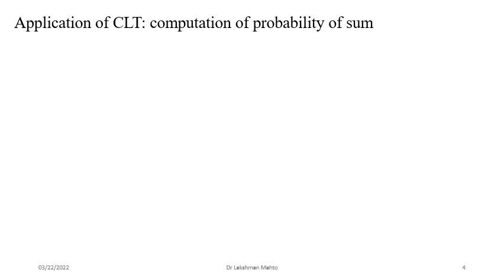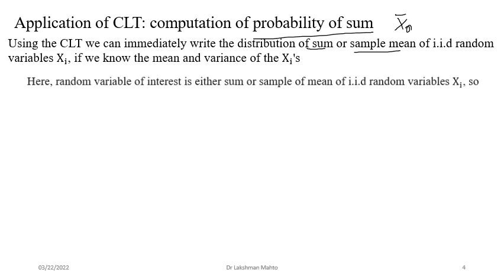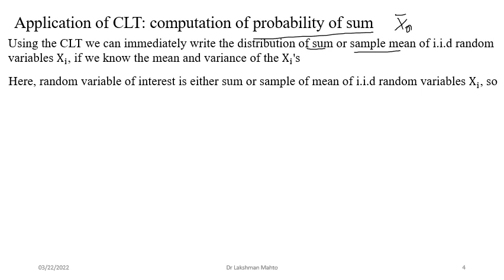Coming to the first part: the application of the central limit theorem to estimate the probability of an event. We want to compute the probability of a sum of random variables when the distribution is unknown. Using the CLT, we can immediately write the distribution of the sample sum or sample mean. We define a sample mean from an i.i.d. random sample of size n. If we know the mean and variance of X_i, we can proceed even when the distribution itself is unknown.